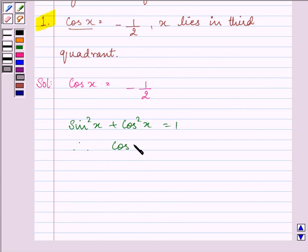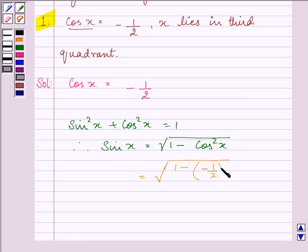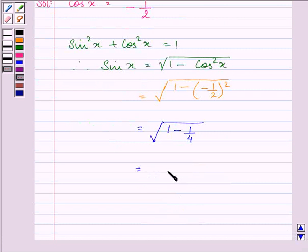Therefore, sin x will be equal to square root of 1 minus cos square x. Let us substitute the value. We have 1 minus minus 1 by 2 the whole square. It will give us 1 minus 1 by 4, that is equal to square root 3 by 4, that is root 3 by 2.